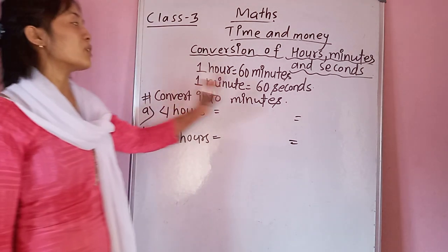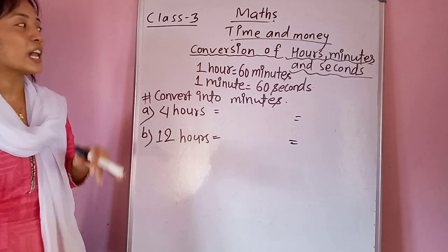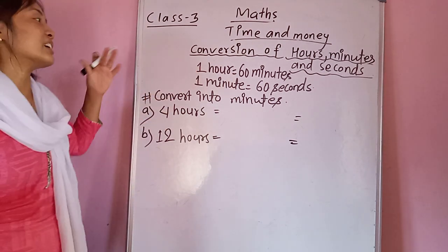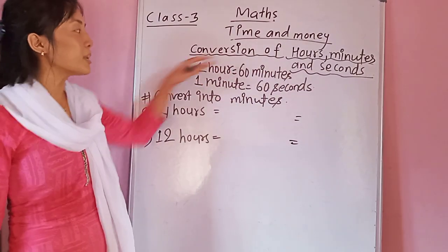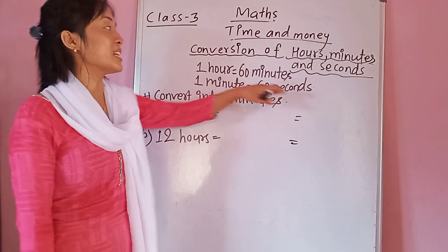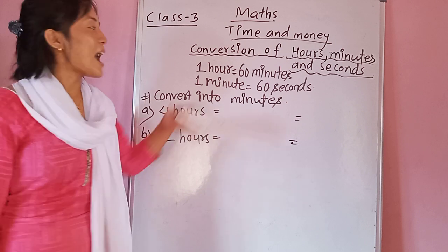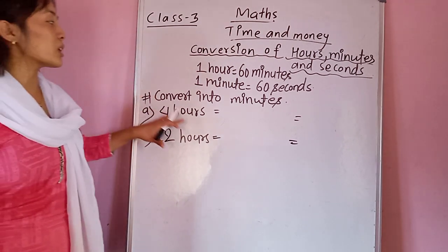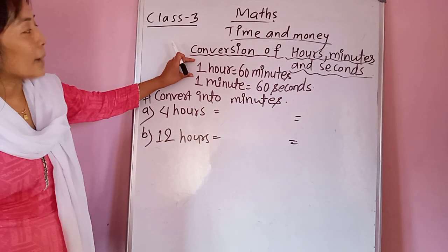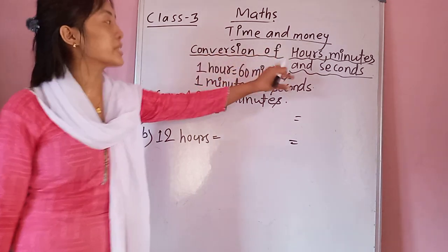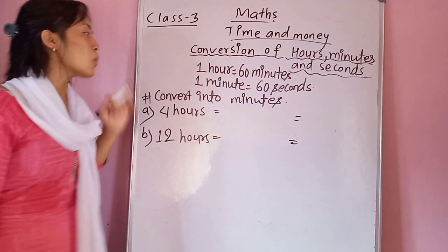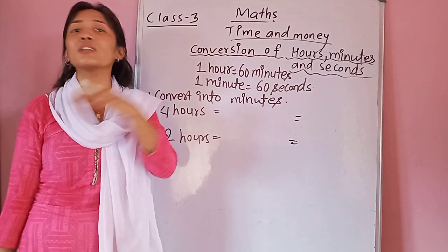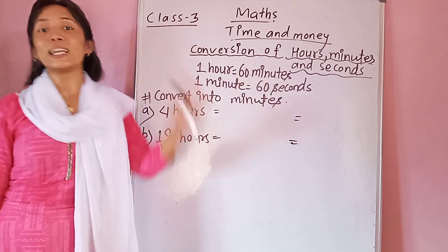Your given question is in hours and you have to convert into minutes. When you compare between hours and minutes, you find that the hour is the greater unit and minutes is the smaller one. So this question is asking you to convert the bigger unit into the smaller unit. You have to follow the first fact: one hour equals 60 minutes.